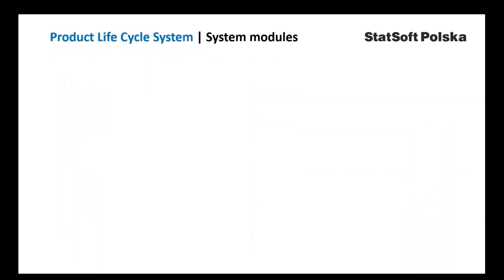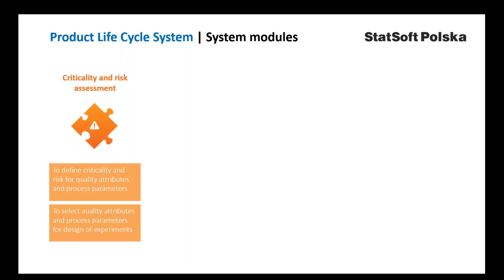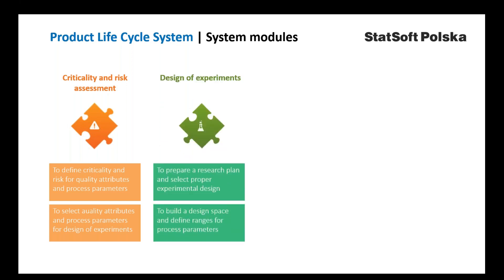To solve those problems, four modules were developed that can be implemented as a whole system or separately. The first module can be used to assess criticality and risk for quality attributes and process parameters to select variables for design of experiments. The second module's objective is to prepare a research plan, select proper experimental design to build a design space, and define ranges for process parameters.